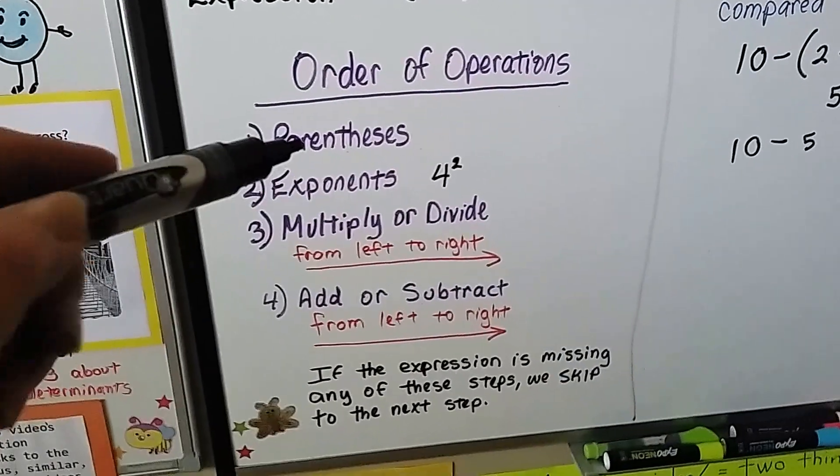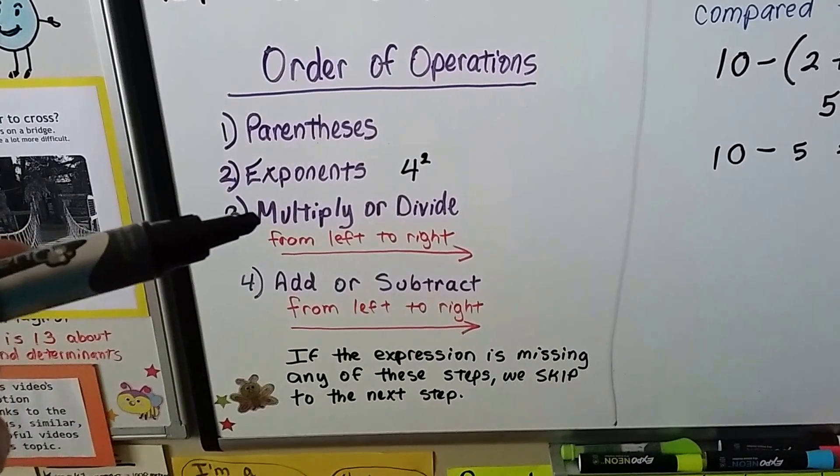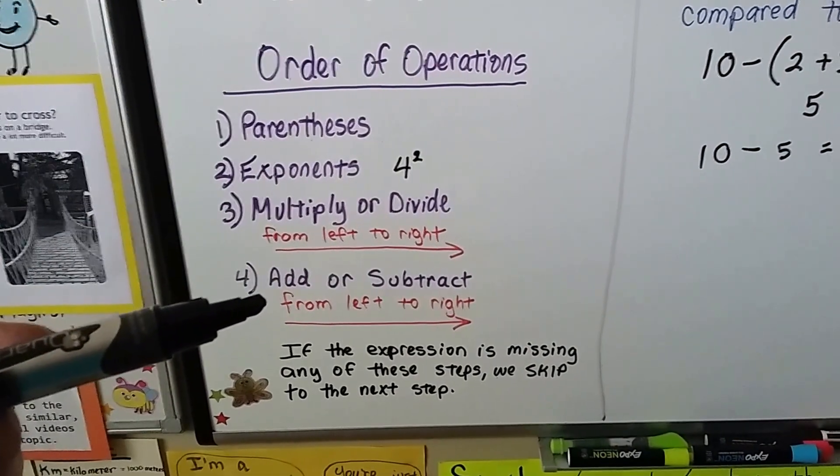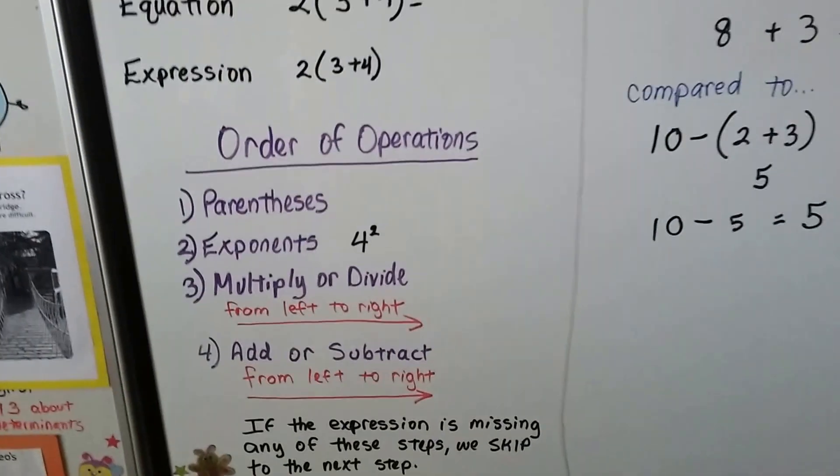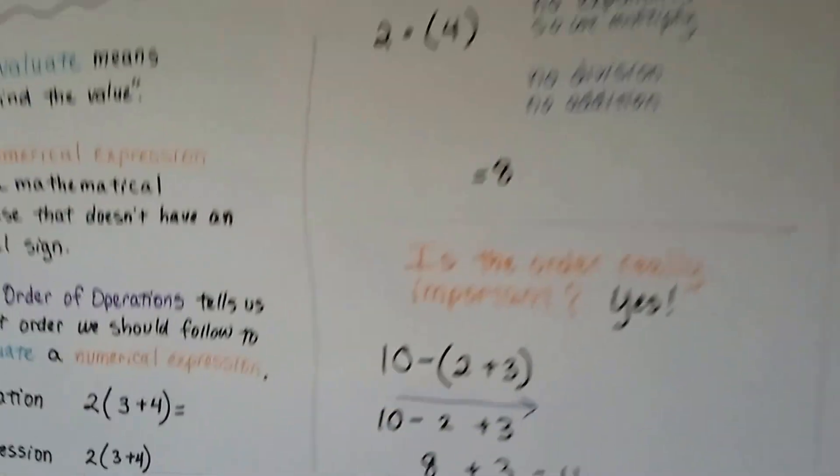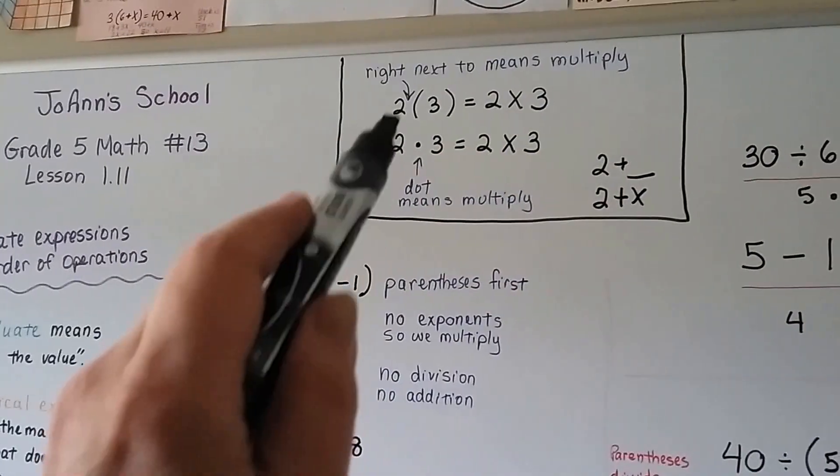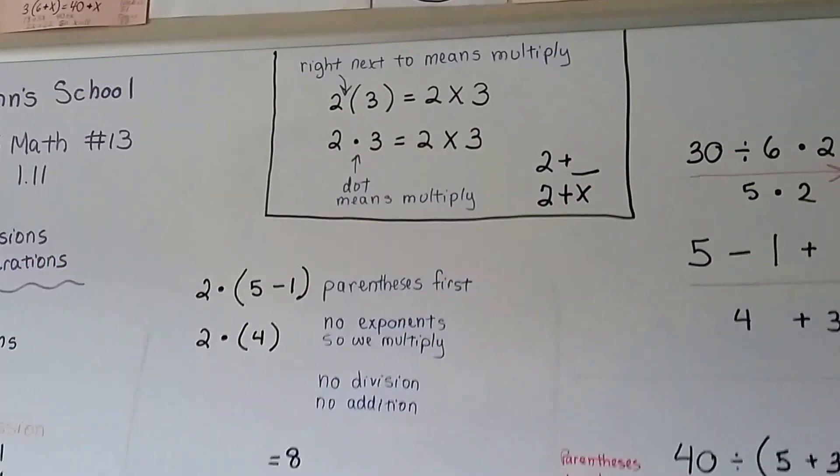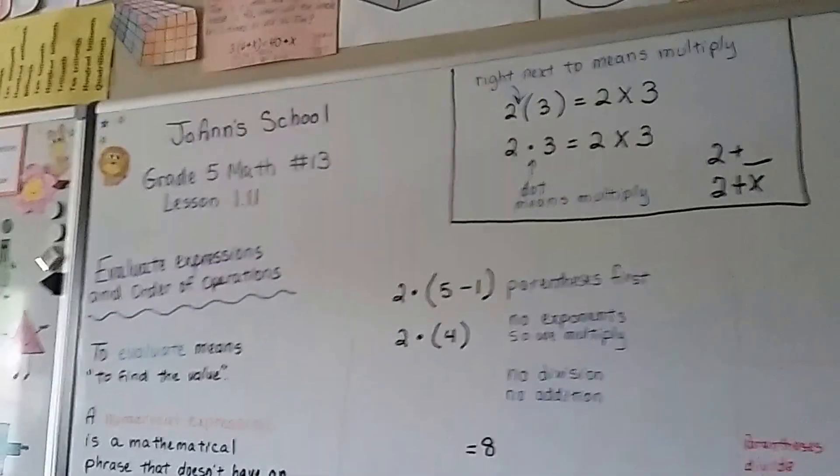So just remember, parentheses, then any exponents, then multiply or divide from left to right or divide or multiply, then add or subtract, or subtract and add from left to right, skip the steps that aren't there, and try to use a dot or your number next to the parentheses. But a dot is fine so that you don't confuse it with variables as you get up higher in math.